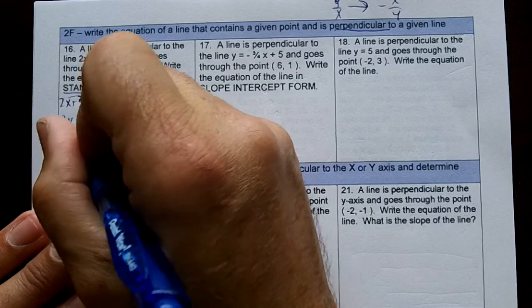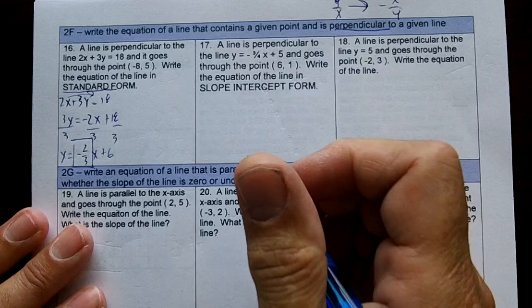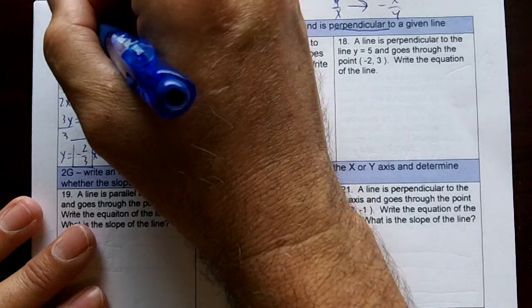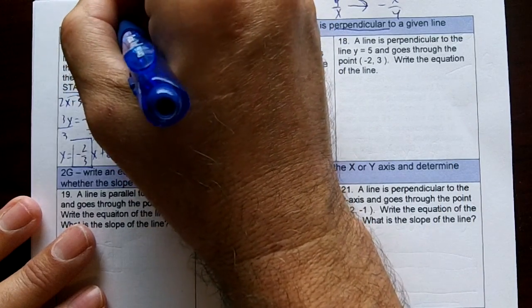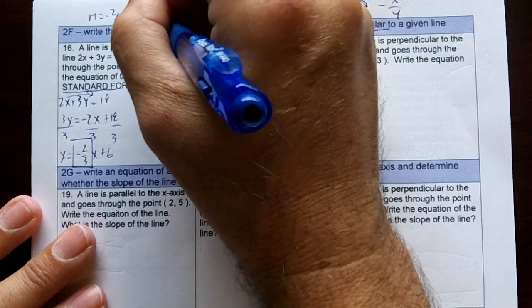So y equals negative 2 over 3x plus 6. My slope is negative 2 over 3, right? So my slope is negative 2 over 3. I'm going to change that, make it perpendicular, and I'm going to get 3 over 2. So I'm going to flip the slope and switch the sign.